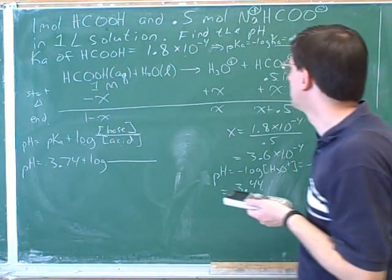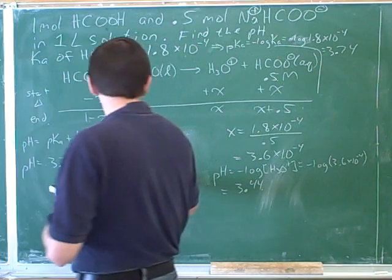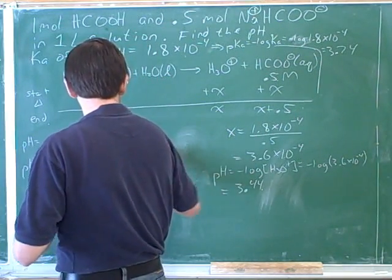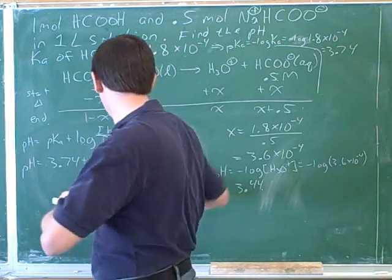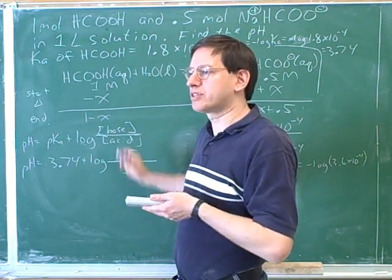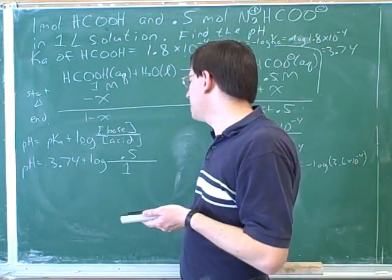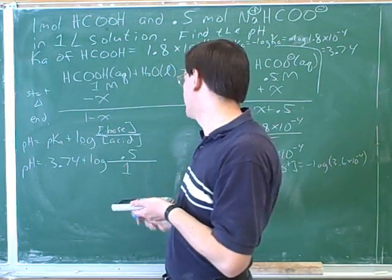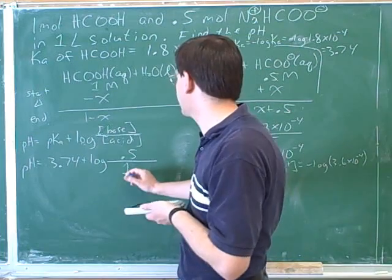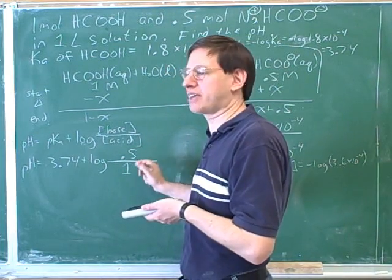What do I put on the top of this equation? Yeah, you put our starting amount of the base, which is 0.5. And on the bottom? 1. Now, these are our starting amounts. Of course, again, we're making the approximation that the starting amount will be approximately the same as the ending amount. So we could put 0.5 plus x and 1 minus x, but then we would just take off the x's again.